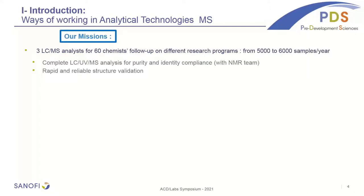So in the Chilly Mazarin site, we are three MS analysts working for chemistry follow-up of nearly 18 chemists. It represents about five to six thousand samples per year. For each sample batch, we perform complete LC-UV-MS analysis to give purity and identity compliance in collaboration with the NMR team.